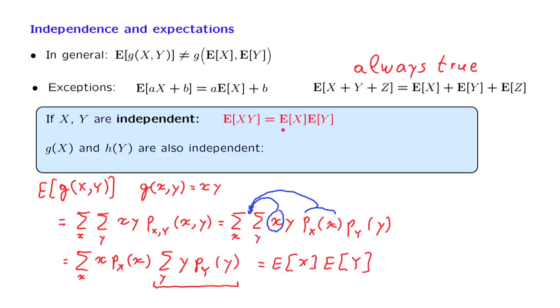Therefore, we can apply the fact that we have already proved, but with g of x in the place of x and h of y in the place of y. And this gives us this more general fact, that the expected value of the product of two functions of independent random variables is equal to the product of the expectations of these functions.